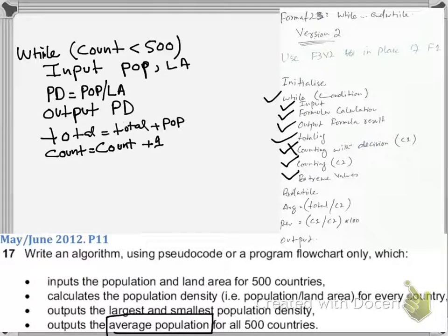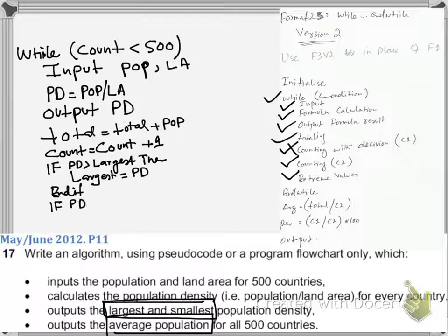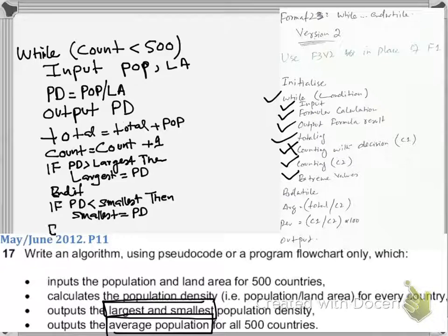Then we have extreme values — the largest and the smallest. If population density is greater than largest, then largest is equal to population density. And if population density is less than smallest, then smallest is equal to population density.